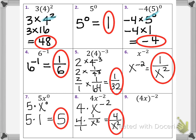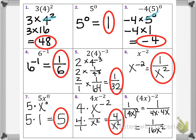Number 9 is slightly different — the base of 4x is now wrapped in parentheses, so the entire term 4x is the base, not just x. This becomes 1 over 4x raised to the positive second power. Squaring means multiplying by itself: 1 over 4x times 4x. Multiplying the 4s gives 16, and x times x is x squared, so the result is 1 over 16x squared.